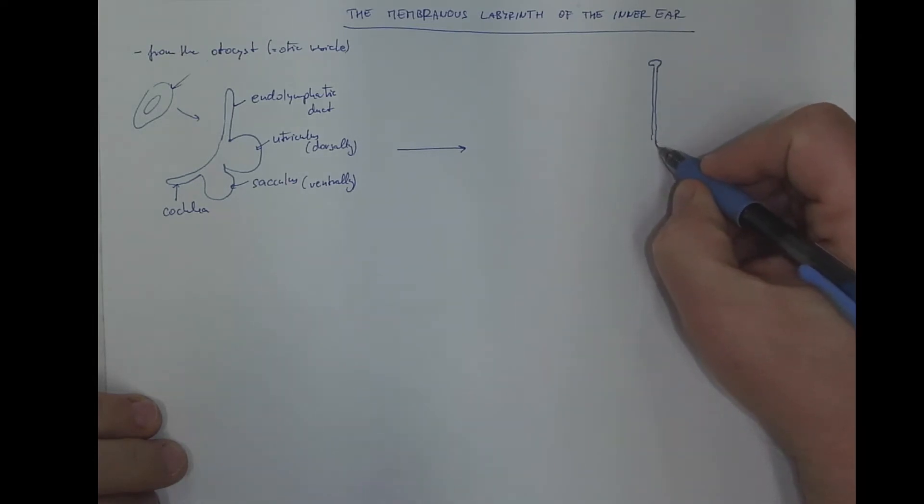And then we got the utriculus and the three semicircular canals that are mutually perpendicular.